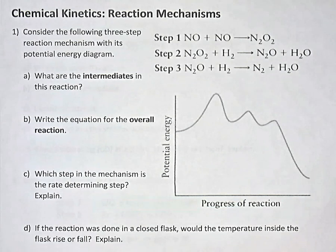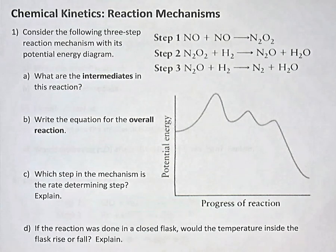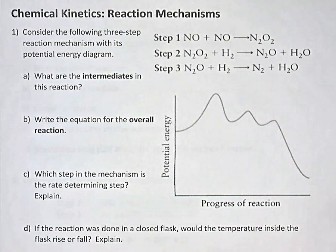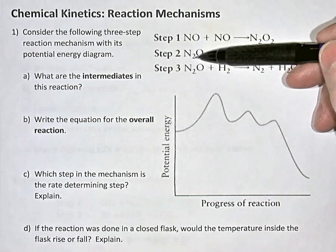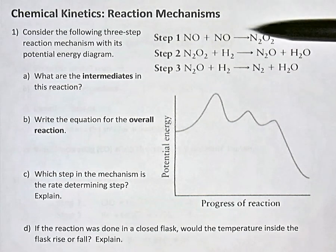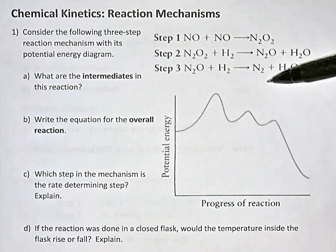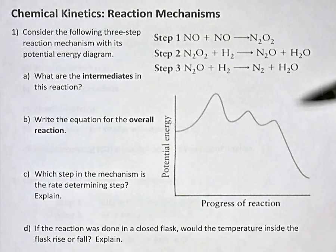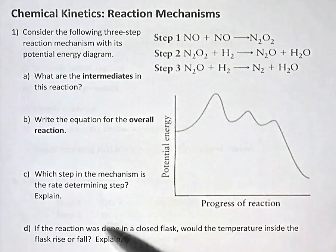In this video we're looking at chemical kinetics for grade 12 chemistry or AP chemistry, and we're going to look at reaction mechanisms — a quick introduction or review. We're given here a three-step reaction mechanism for a reaction where the collisions happen in three different steps, and we're asked a few questions on the side.